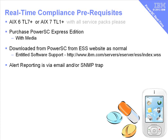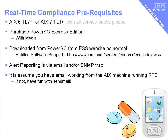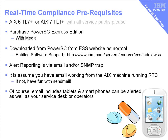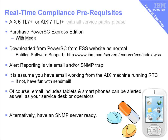For the alerting, it'll either appear as email or SNMP traps. If you're using email, it's assuming that email is working on the machine on which you're running RTC. Email these days means that the messages can be sent to tablets and smartphones, as well as your service desk or group of operators. Alternatively, we could be using SNMP traps. We're assuming here that you already have an SNMP server running ready to catch these. It's quite often a systems management operation - you'll either have Systems Director or Tivoli or one of the equivalents, and they're quite happy to take SNMP traps, add that to their problem management system, and alert you that way.